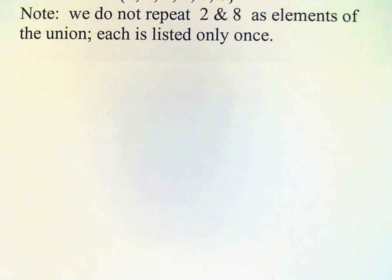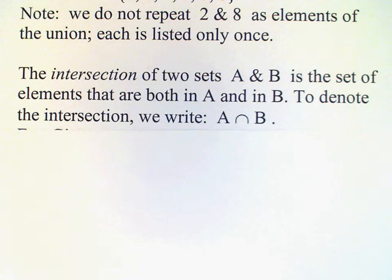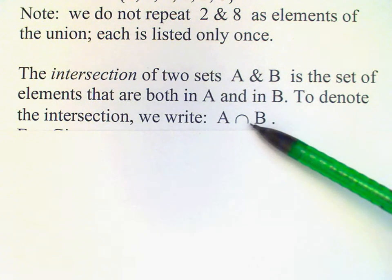Okay, the next operation I want to tell you about is called the intersection. Basically, the intersection of two sets is the set of elements which are common to both sets. So for an element to be in the intersection, it must be in both sets. We indicate we have an intersection with this symbol here which is similar to the union symbol, only upside down.